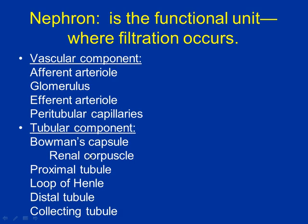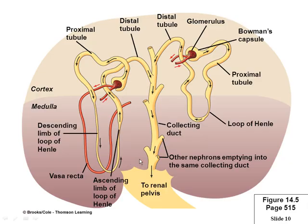You have to know these different components and the order they go in. Blood flow goes into Bowman's capsule, proximal tubule, descending loop of Henle, ascending loop, back over next to the afferent and efferent arterioles, into the distal tubule, collecting duct, renal pelvis, and out.